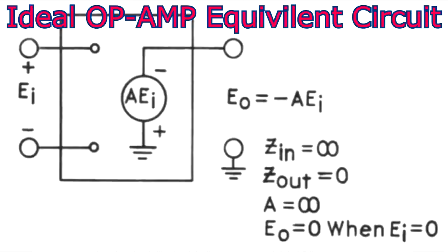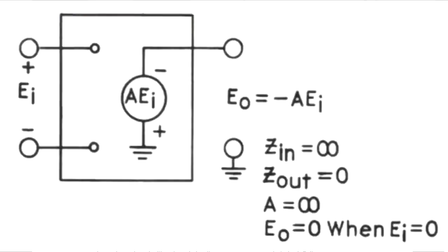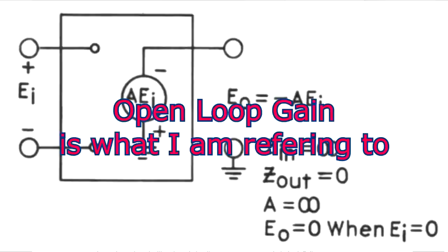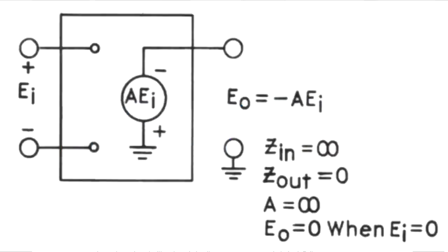Here is the ideal operational amplifier. The inputs are shown as basically open circuit — they have infinite input impedance. Z-in is infinity, the output is zero impedance, the gain is infinity, and E-out equals zero when E-in equals zero. All things being ideal, that's the way this would work, but I'm going to show you on the bench that that's actually not the case in reality, so you need to take certain steps to make things more stable.